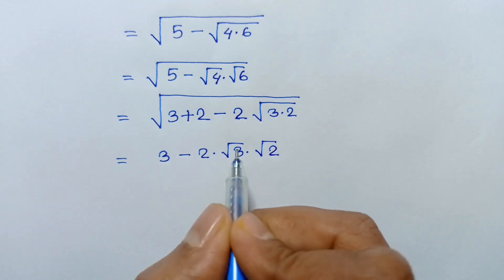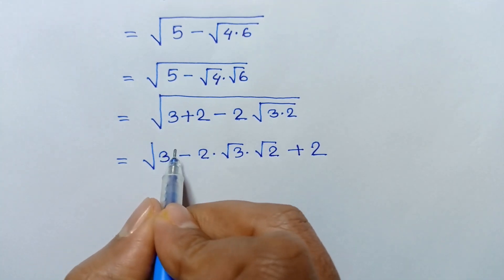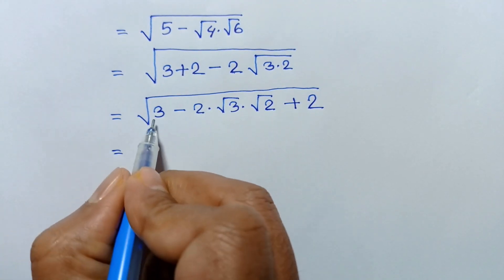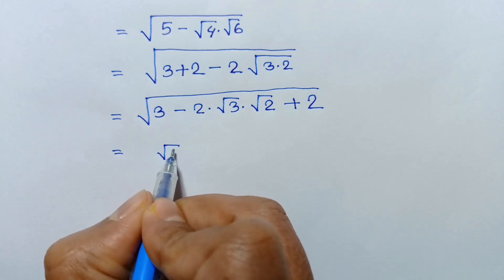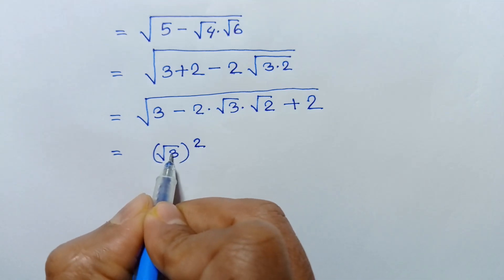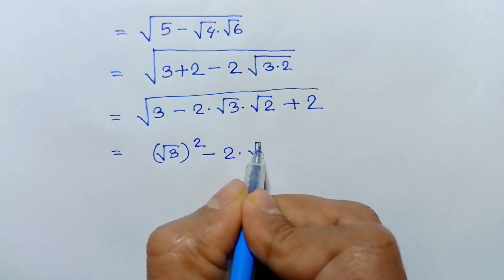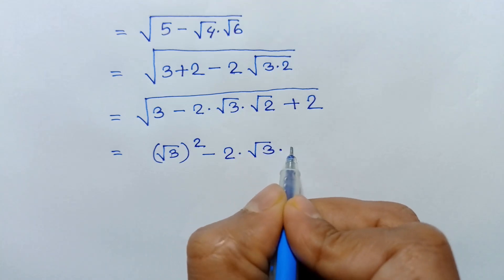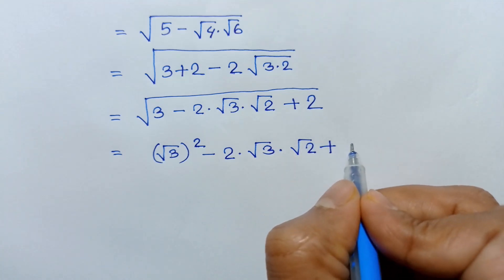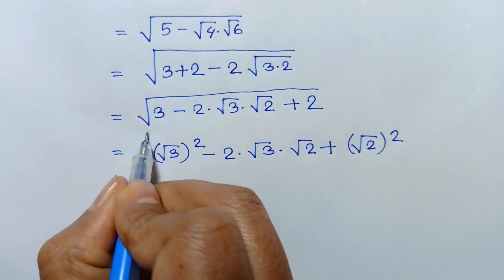Taking these terms, we can write this under the square root. The 3 can be written as square root of 3 whole squared, and the 2 can be written as square root of 2 whole squared. So we have square root of 3 whole squared minus 2 times square root of 3 times square root of 2 plus square root of 2 whole squared, all under a square root.